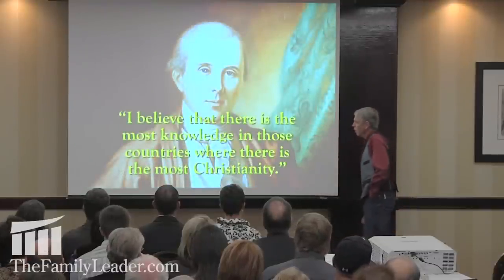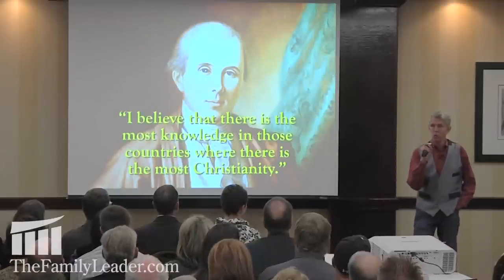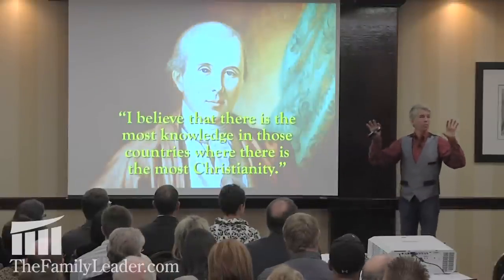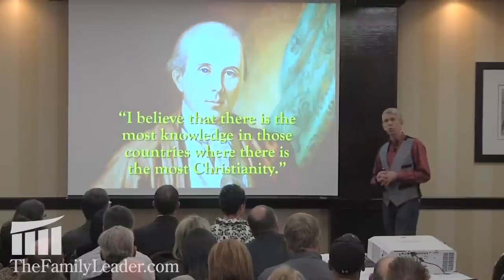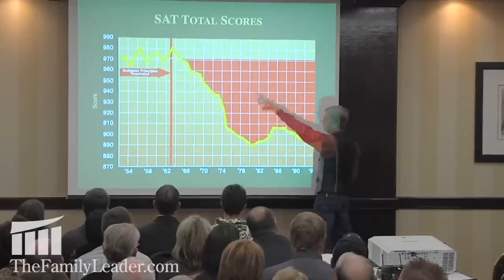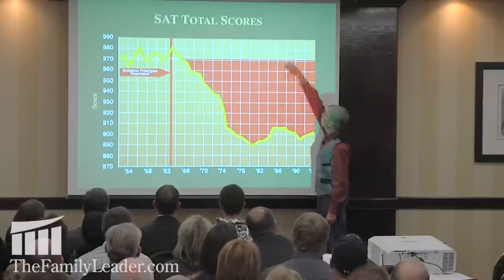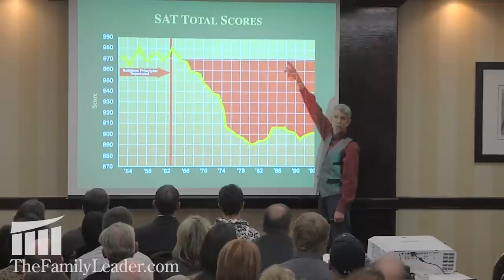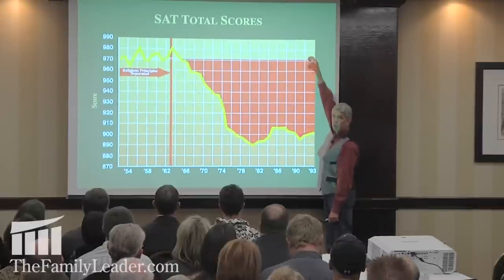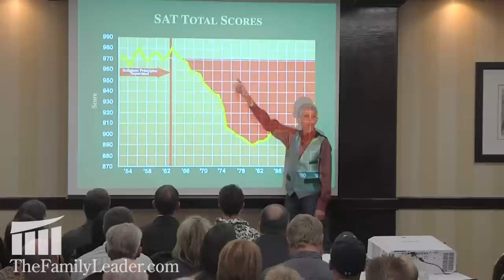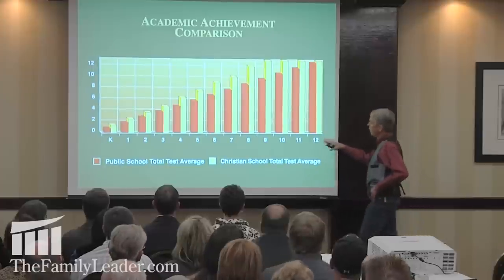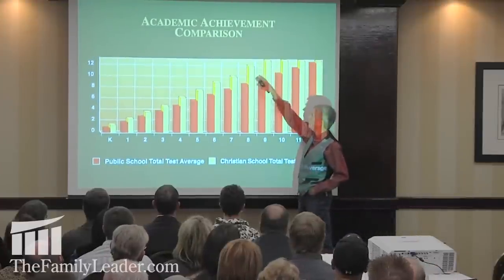There are six nationally normed standardized tests used in education today — California Achievement Tests, Stanford Achievement Tests, Iowa Tests of Basic Skills. Kids from Christian schools and public schools both use them. We have 12% of the nation attending either home schooling or Christian schooling. On those tests, the SAT which goes back to 1926 — when you take God out, scores drop. But the 12% in private education have scores still back where they were prior to 1962-63, while the 88% in public schools have continued to drop.